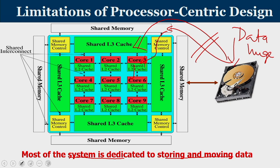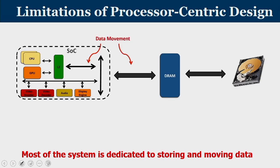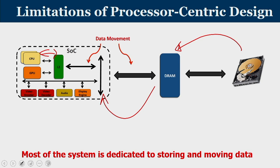In this decade, since data is a dominating factor, we should think about alternate designs that can process data fast. The limitations of processor-centric design include lots of data movement — from hard disk to DRAM, from DRAM to the chip, from L2 to L1 — along with miss penalties. When you have a lot of data, you cannot keep everything in cache; caches encounter misses and we try to come up with optimization designs. Most of the system is dedicated to storing and moving data to facilitate processing.